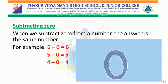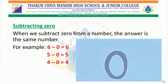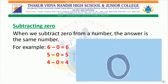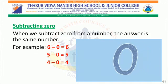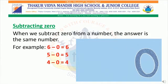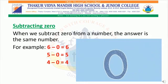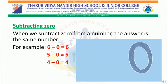Subtracting 0: when we subtract 0 from a number, the answer is the same number. For example, 6 minus 0 is equal to 6. 5 minus 0 is equal to 5. 4 minus 0 is equal to 4.